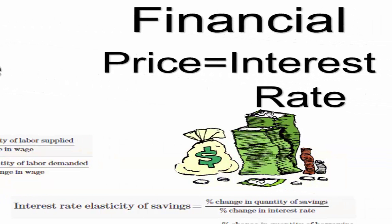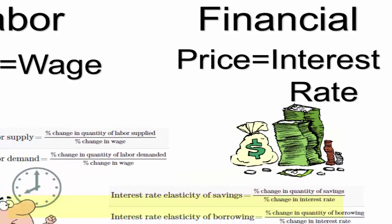In the financial market, the price of money is the interest rate and the quantity is the amount of dollars transacted in a financial market. Savings of households and individuals are the supply side of financial markets. We can calculate the elasticity of savings, and the coefficient will give us insight into the supply of money based on changes of interest rates. Here is the equation. This coefficient is also calculated and interpreted in the same manner that price elasticity of supply and demand are.